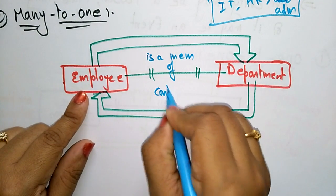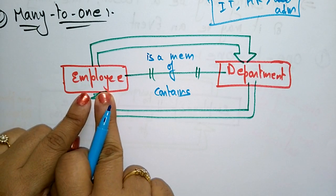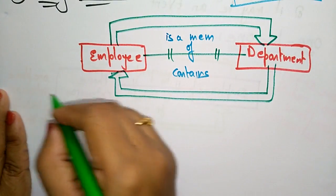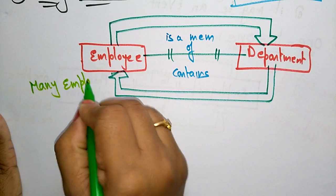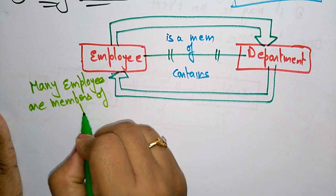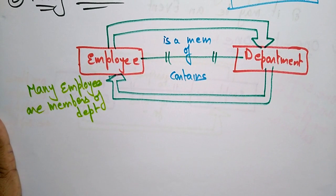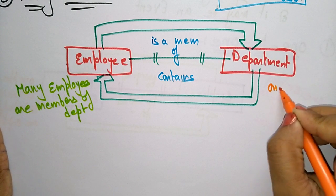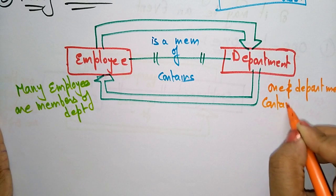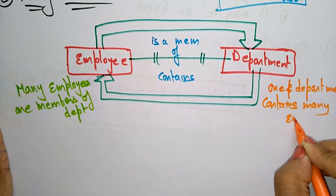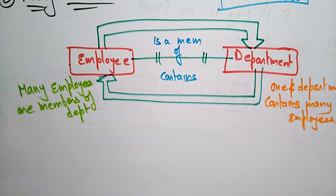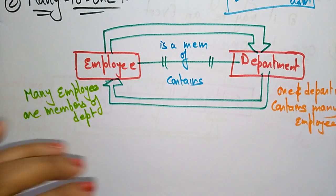A department contains employees, and an employee is a member of a department. Many employees are members of one department, and one department contains many employees. This shows the many-to-one relationship: many employees can work in one department.